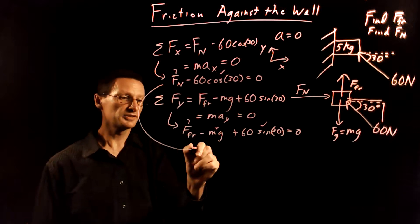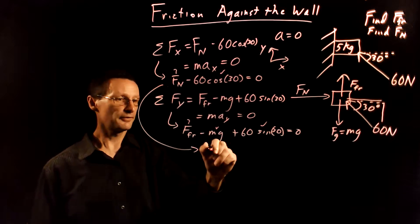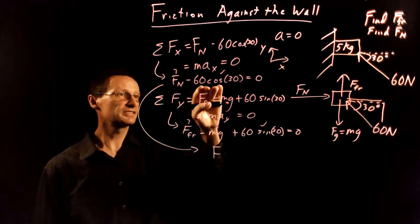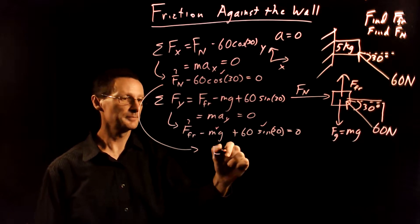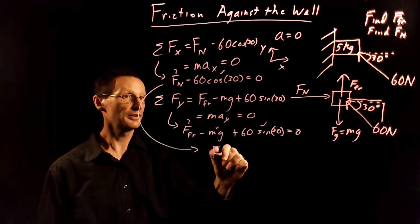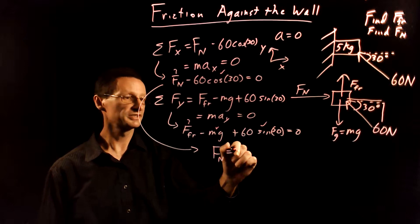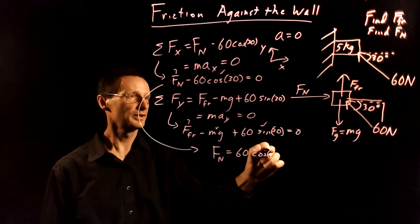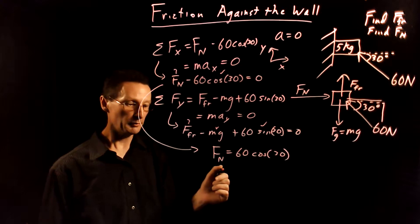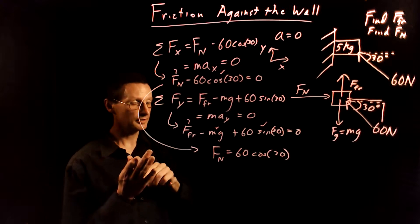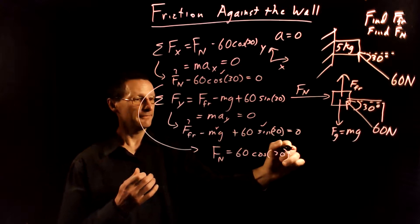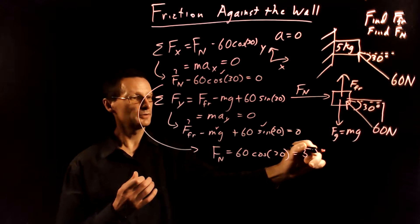Okay so let's take this force here and solve for that one. That one's going to be, let me take the 60 and throw it on the other side there. So that's going to be the normal force is 60 cosine of 30 degrees and I went ahead and punched this into my calculator earlier and I found this to be 52 newtons.